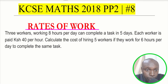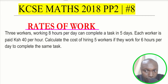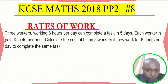Hello everybody and welcome to the lesson. KCSE Mathematics 2018 Paper 2, Question Number 8. The question is on rates of work. It reads: three workers working eight hours per day can complete a task in five days. Each worker is paid 40 Kenyan shillings per hour. Calculate the cost of hiring five workers if they work for six hours per day to complete the same task.